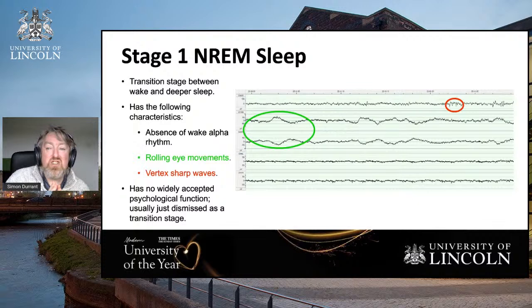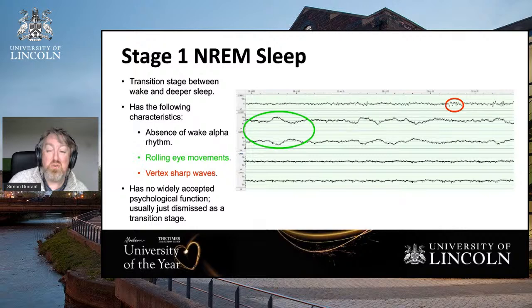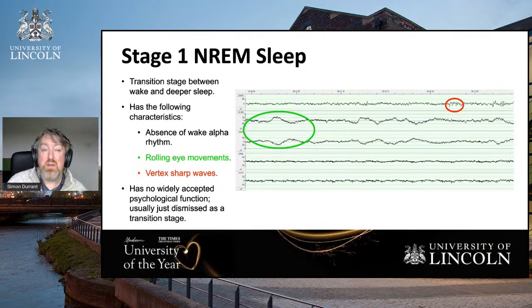The transition into sleep starts with what we call Stage 1 non-REM sleep, or NREM sleep — as opposed to REM sleep, which I'll show you in a moment. It is characterized by the loss of alpha rhythm: alpha rhythm disappears and you actually get rolling eye movements. If you ever see somebody fall asleep, you'll see their eyes begin to roll around.